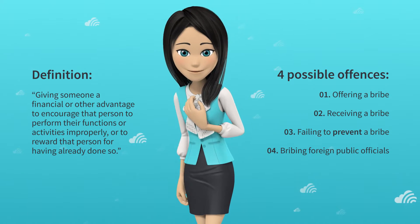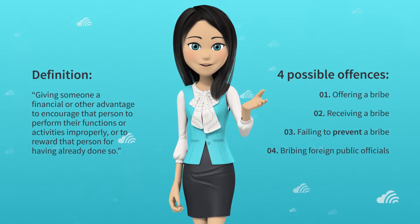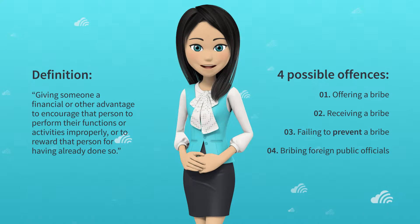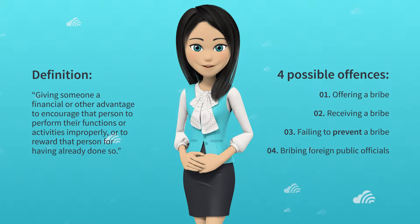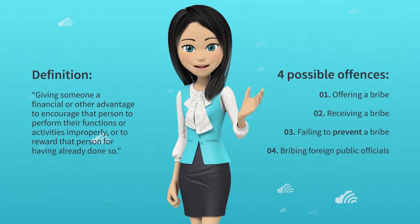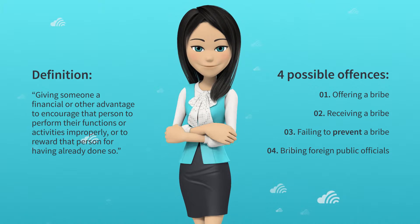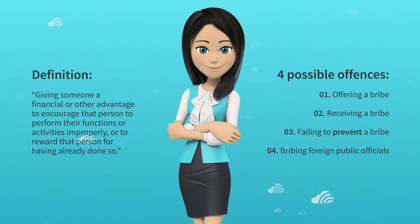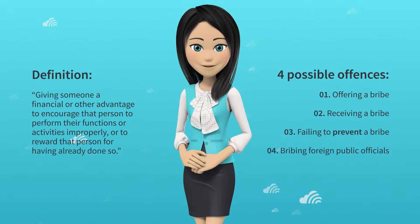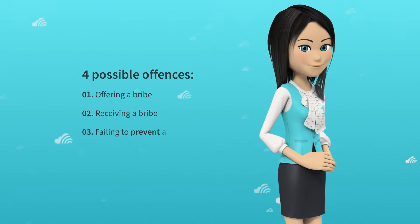The definition of bribery is: giving someone a financial or other advantage to encourage that person to perform their functions or activities improperly, or to reward that person for having already done so. It is interesting to note that the advantage given does not necessarily have to be financial in nature. There are four offences under the Act.